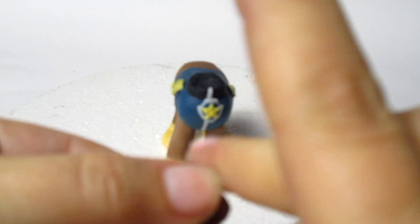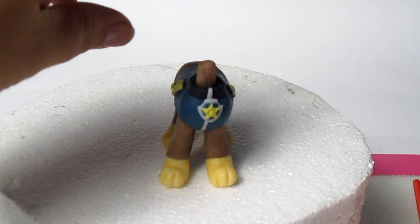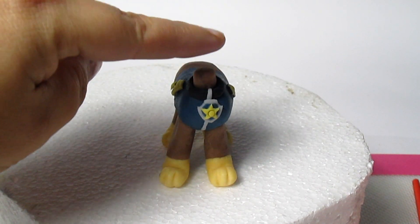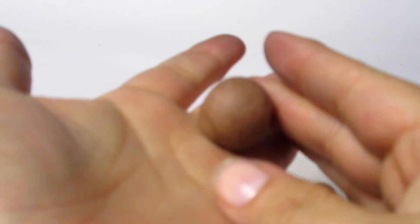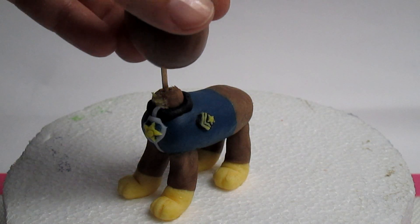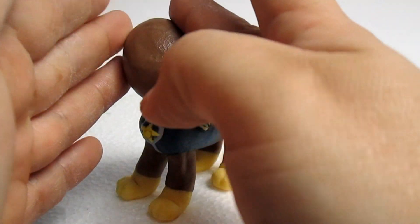To make the neck, I'm using some brown fondant. Just place it in the middle of the collar. Instead, to make the head, I'm using some brown fondant. It's an oval, and to get all the measurements, you can check in my blog.